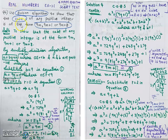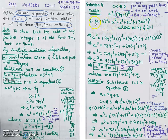Now, (9q + 1)³ is compared to the algebraic identity (a + b)³ = a³ + b³ + 3a²b + 3ab², where here a = 9q and b = 1.